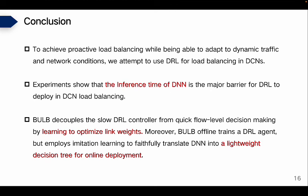To conclude, we attempted to use DRL for load balancing in data center networks to achieve proactive load balancing while adapting to dynamic traffic and network conditions. Experiments revealed that DNN inference time is the major barrier for DRL deployment in DCN load balancing. So we propose BULB, a lightweight and automated load balancer for fast DCNs. BULB decouples the slow DRL controller from quick flow-level decision-making by learning to optimize link weights, and uses imitation learning to faithfully transfer the DNN into a lightweight decision tree for online deployment.